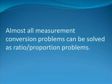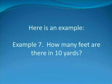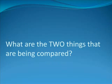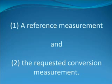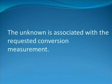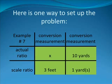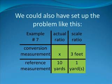Almost all measurement conversion problems can be solved as ratio-proportion problems. Here is an example. Example number seven. How many feet are there in ten yards? You may remember that there are three feet in a yard, or you may look at a conversion chart and see that one yard equals three feet. What are the two things that are being compared? A reference measurement and the requested conversion measurement. The unknown is associated with the requested conversion measurement. The characteristics are the scale ratio and the actual ratio. On your screen, you see how this problem should be set up in tic-tac-toe format.